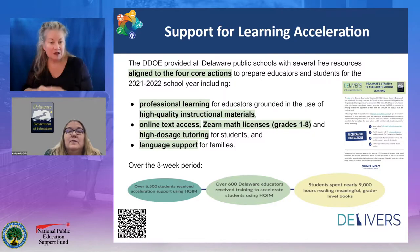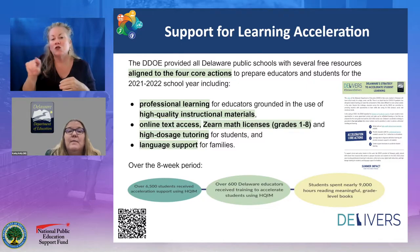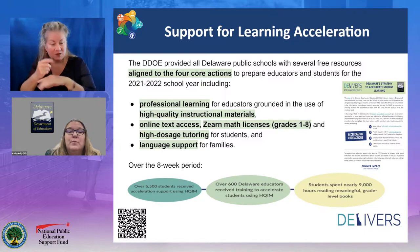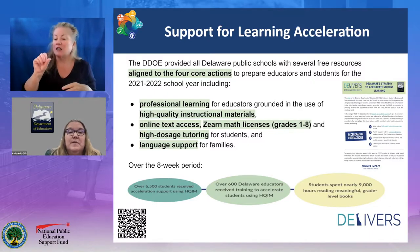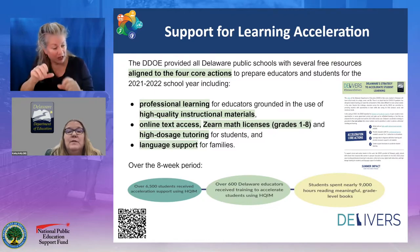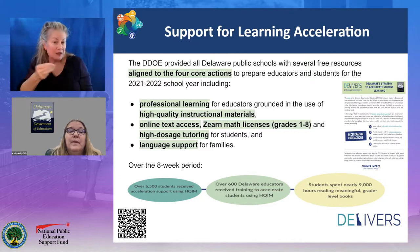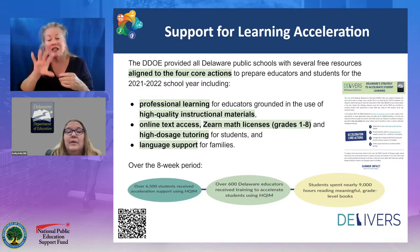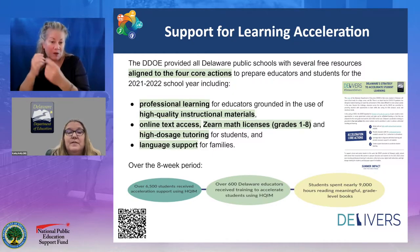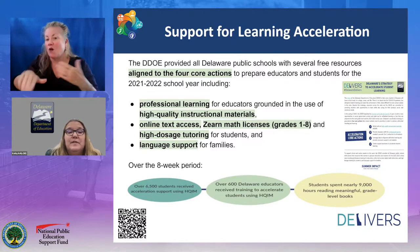Students were provided access to Zearn's summer boost content designed to prioritize content and set them up for success in grade-level learning as they approach the new school year. The American Rescue Plan funding allowed us to engage in a high-dosage tutoring strategy supporting students across the state using rigorous materials. Delaware also provided access to language lines so parents and schools could communicate more seamlessly about student needs while minimizing language barriers. Over the eight-week period, over 6,500 students received acceleration supports using high-quality instructional materials, and 600 educators received training on using high-quality materials to accelerate to grade-level instruction. Students spent nearly 9,000 hours reading grade-level knowledge-building texts.